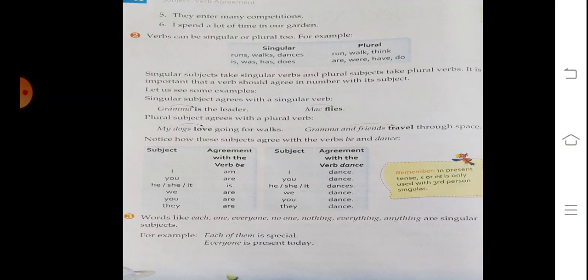Subject agreement with the verb 'be' and 'dance': I am, you are, he/she/it is, we are, you are, they are. Subject agreement with the verb 'dance': I dance, you dance, he/she/it dances, we dance, you dance, they dance.